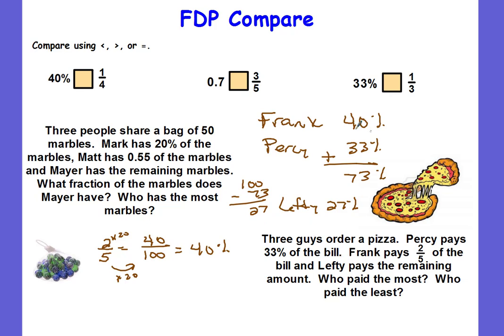Frank plus Percy plus Lefty should add up to 100 percent. Who paid the most? Frank at 40 percent. Who paid the least? Lefty at 27 percent. Could you have changed these to fractions? Sure — 33 percent becomes 33 over 100, two-fifths becomes 40 over 100, add them and subtract from 100 to find Lefty's 27 over 100.